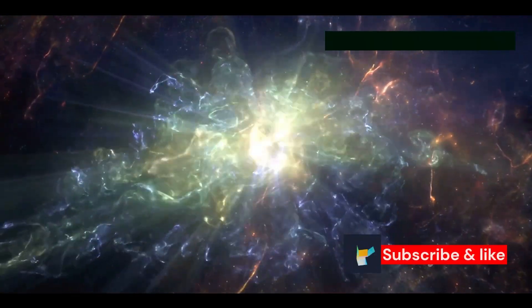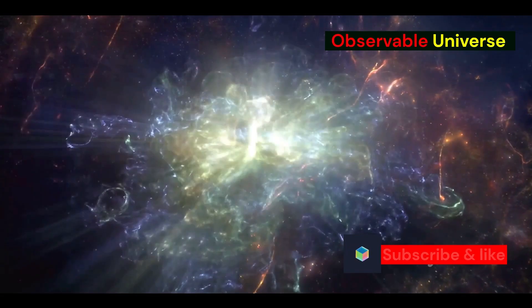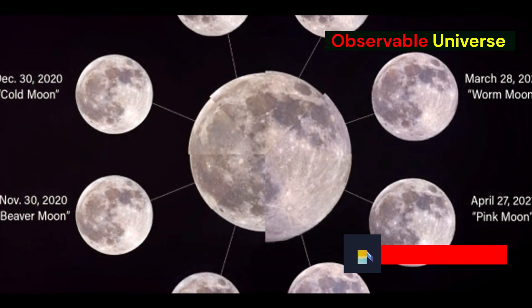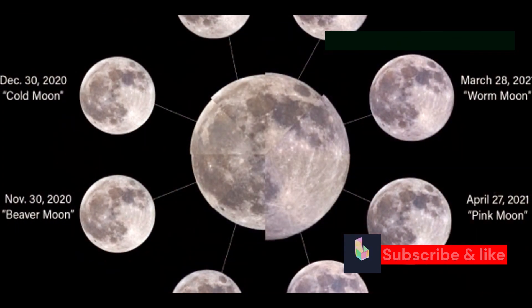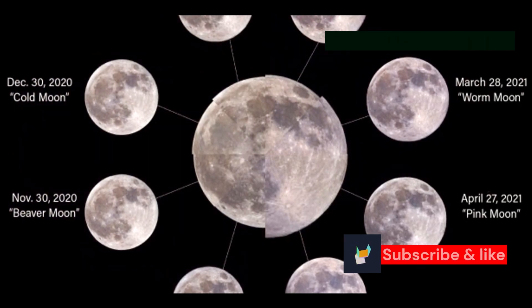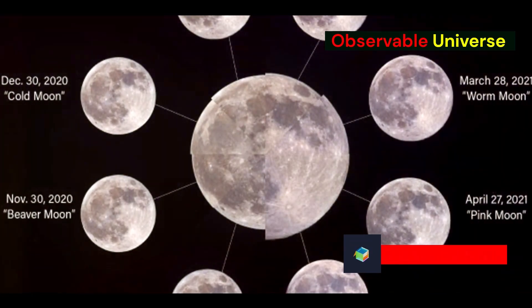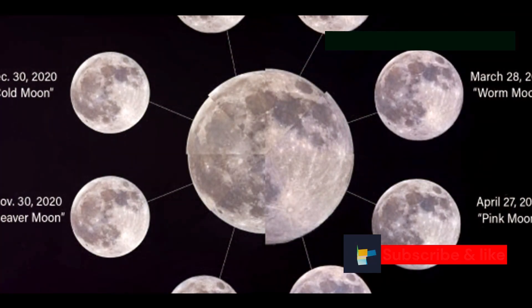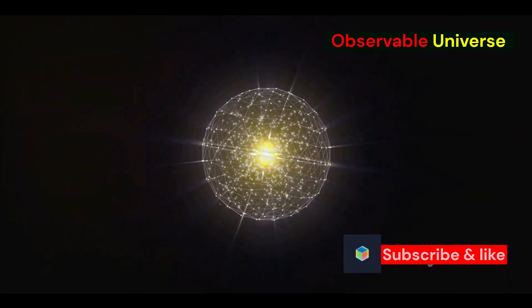The possibilities are endless and stretch the boundaries of our understanding. One compelling piece of evidence that hints at the possibility of a multiverse comes from string theory, a theoretical framework in physics that attempts to unify all the fundamental forces of nature. String theory posits that the fundamental particles we observe are actually tiny vibrating strings.